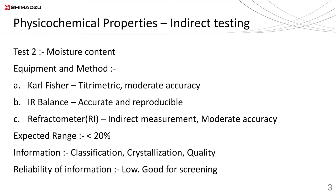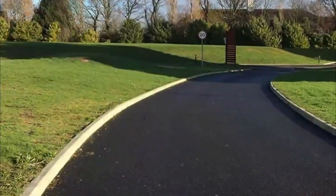The next parameter is moisture content, which is also an important quality indicator. As per FSSAI, the moisture content should be less than 20%, and higher moisture can indicate the possibility of adulteration or improper processing. Moisture can be measured by three different techniques: Karl Fischer titration, IR balance (gravimetric method), or by measuring the refractive index of the sample. Among these, the IR balance is the most easy and accurate method.